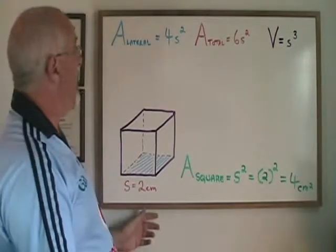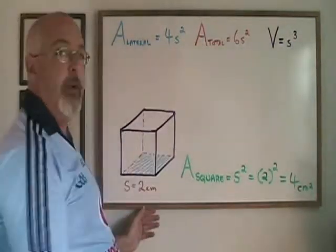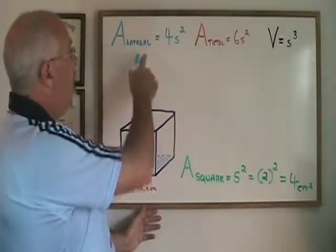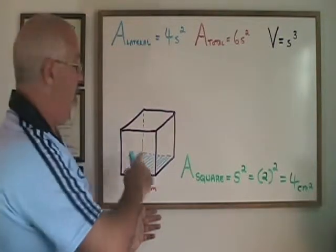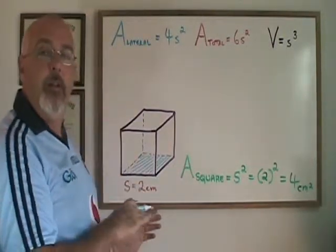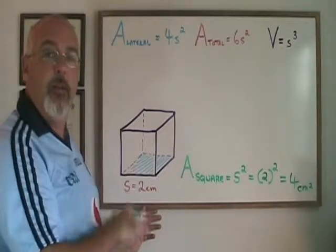The formula for lateral area of a cube is 4s squared, 4 times the area of the square. The lateral area is the total area of the four sides of the cube, not including the sides that are lying flat on the top and the bottom.